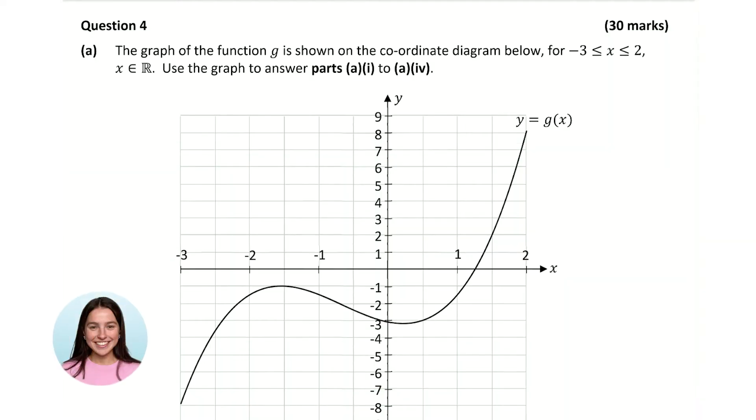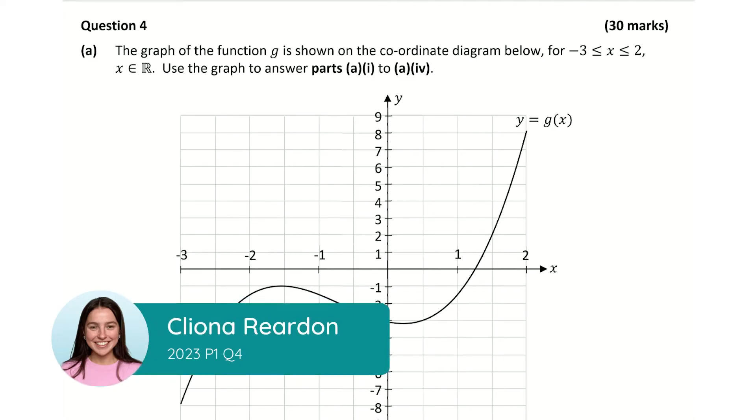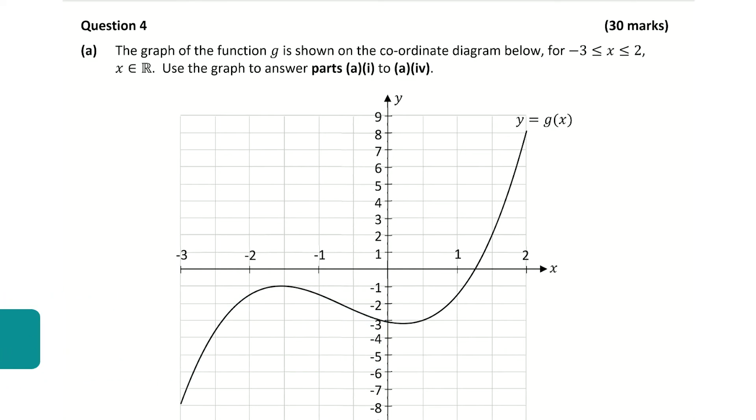Hello everyone and welcome to this video. Kalina here. Today I'm going to take you through the solution to this short question from the Leaving Cert paper. This question is based on functions and it's worth 30 marks. In question A we're told that the graph of the function g is shown on the coordinate diagram below for -3 ≤ x ≤ 2.